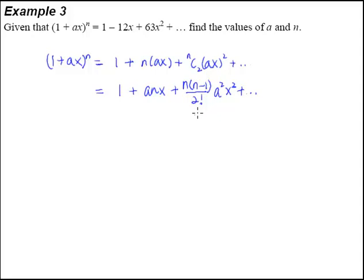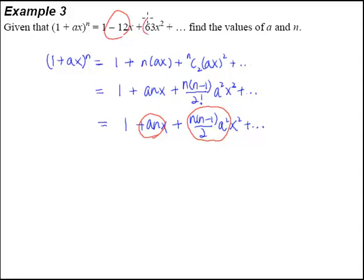So now we can further simplify this. We have 1 plus anx plus n multiplied by n minus 1 over 2 factorial is 2 and then a squared x squared plus dot dot dot. So what we know from here will be definitely, our an is actually negative 12 and this big chunk here is our 63.